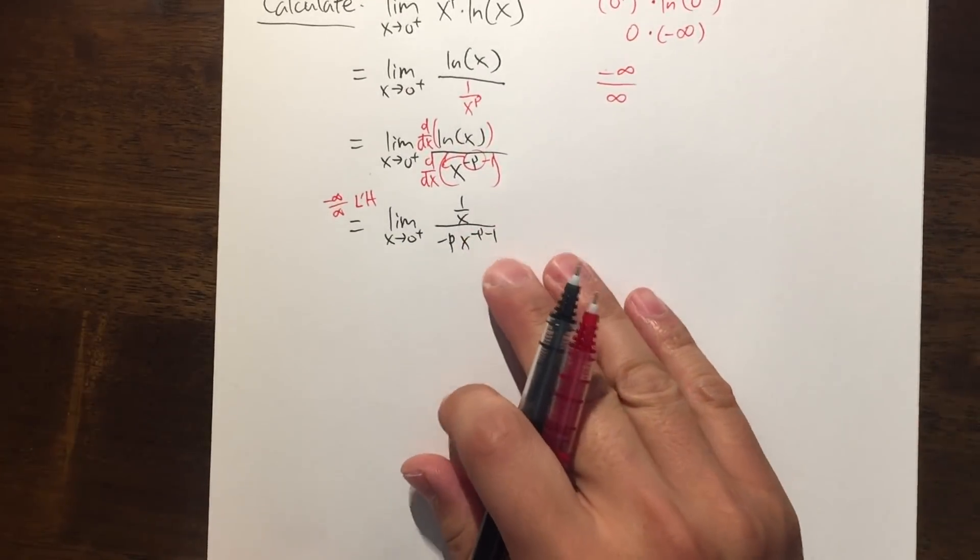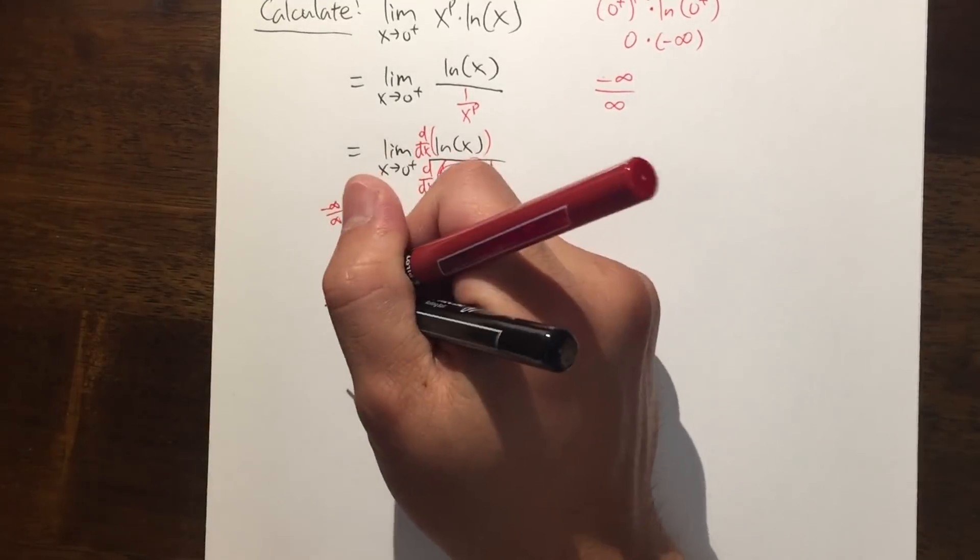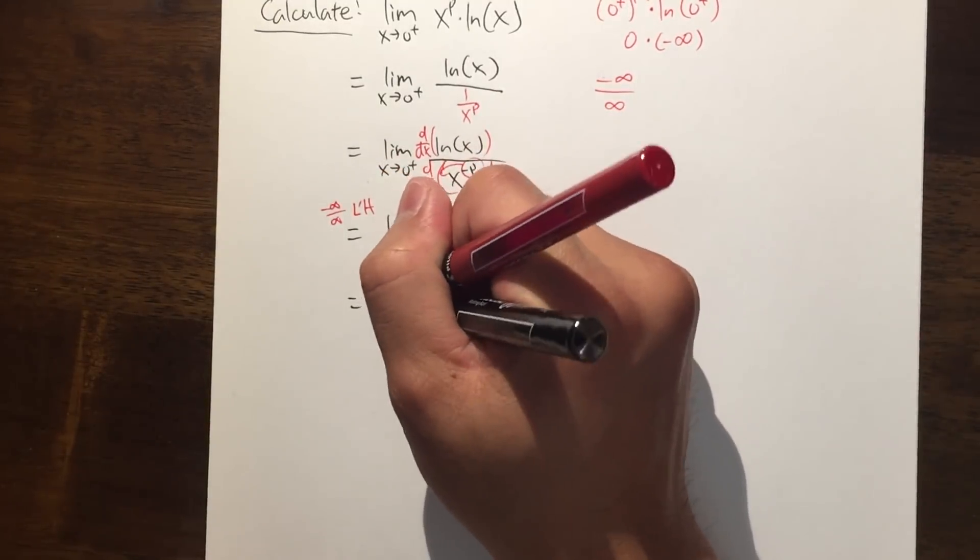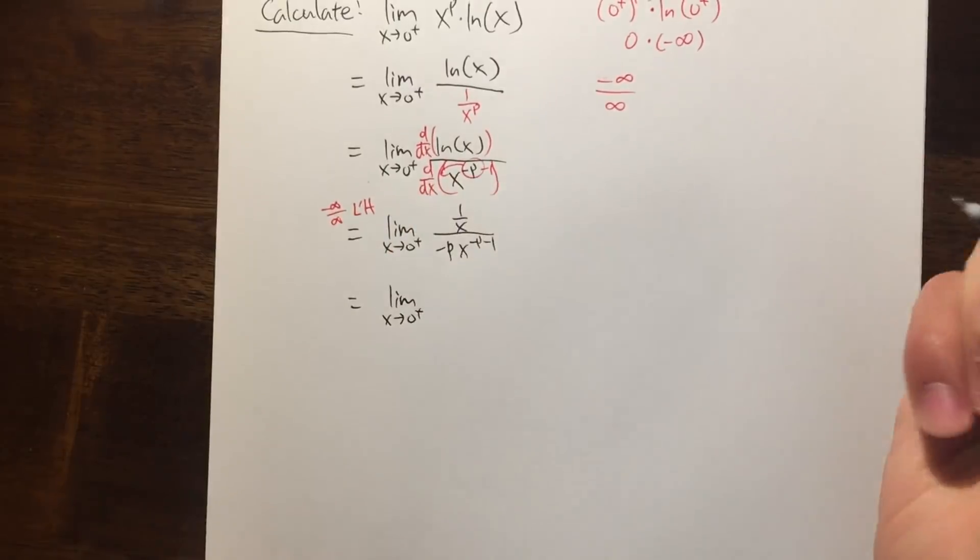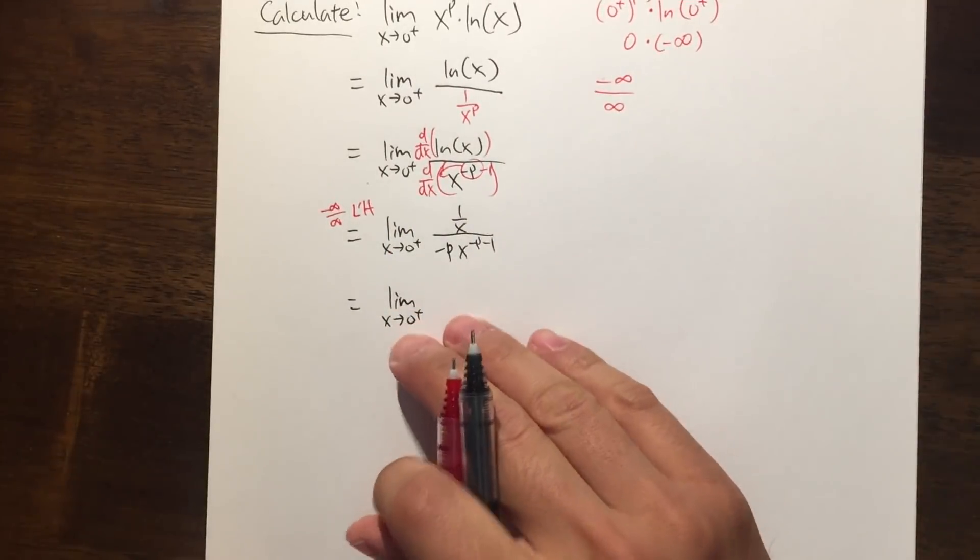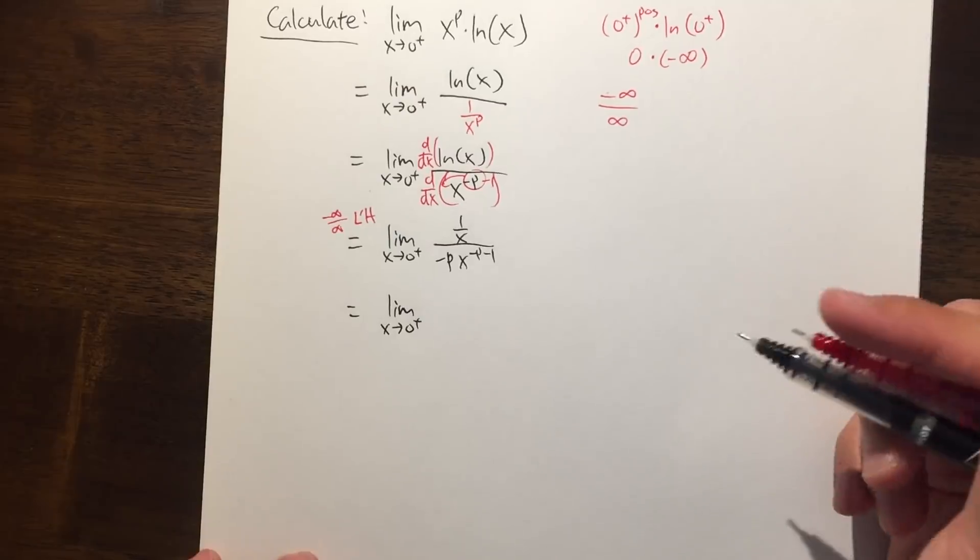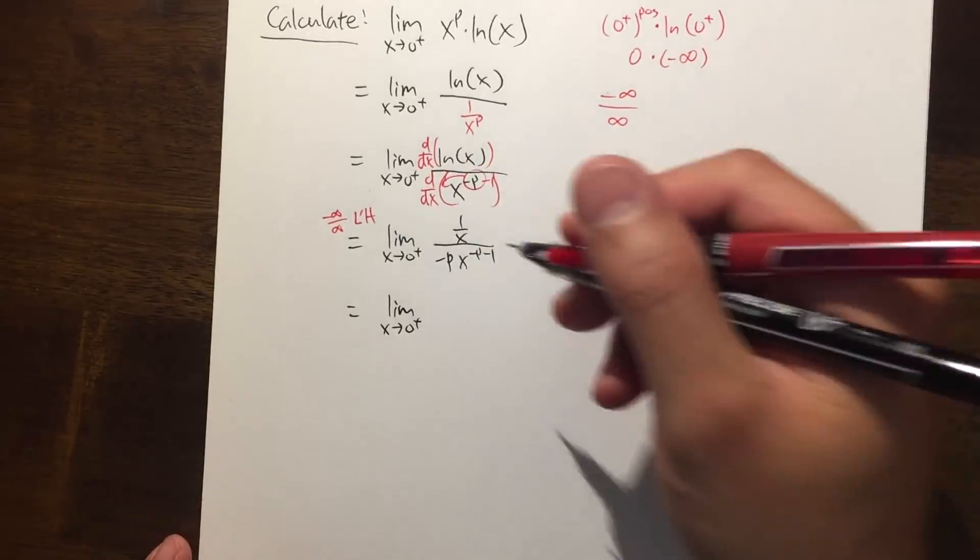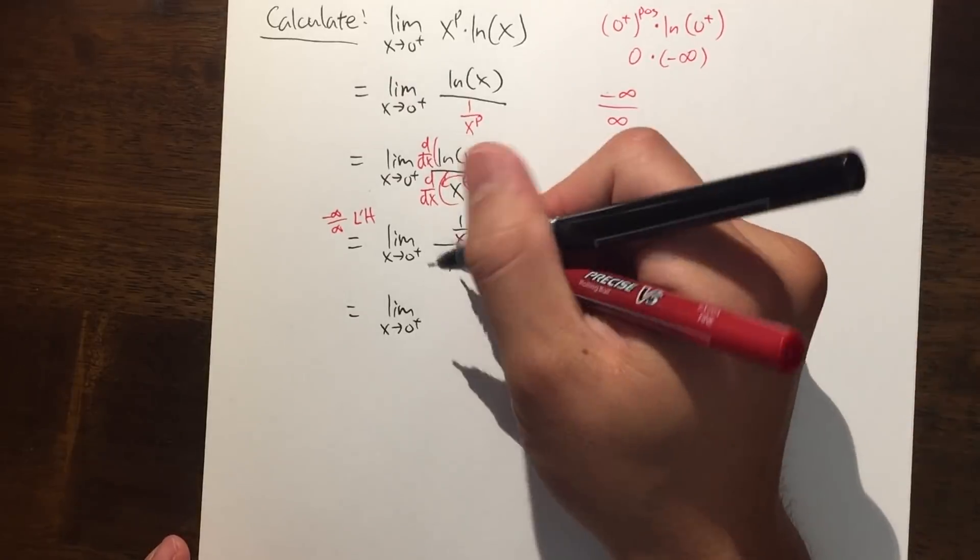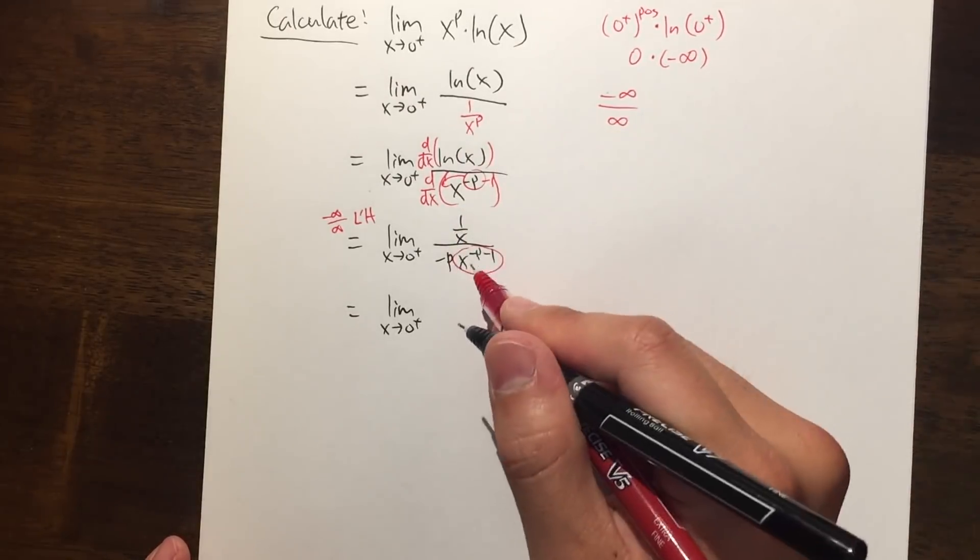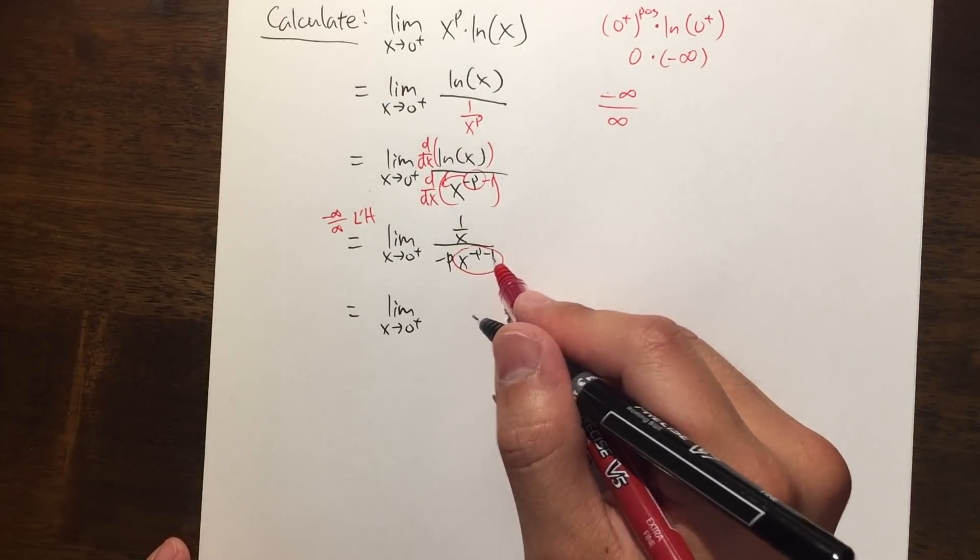Okay, hopefully right here we can do some simplification and that would be nice. So let's see the limit as x goes to 0 plus. Let's do some algebra right here. Notice this part, this negative p's power minus 1, I can bring that up and it becomes positive p plus 1.